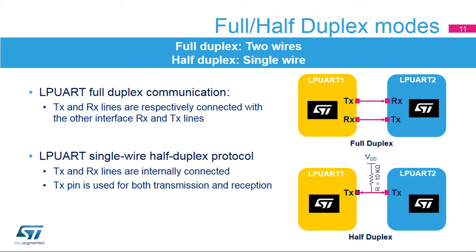In this communication mode, only the TX pin is used for both transmission and reception. The TX pin is always released when no data is transmitted; thus, it acts as a standard I/O in idle or reception states. For this usage, the I/O must be configured with the TX pin in Alternate Function Open Drain mode with an external pull-up resistor.